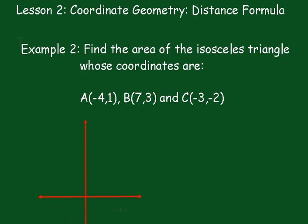In example 2 we have to find the area of the isosceles triangle whose coordinates are A(-4, 1), B(7, 3) and C(-3, -2). We need to plot these points so we can determine which sides are equal. A is -4, 1, B is 7, 3, and C is -3, -2.